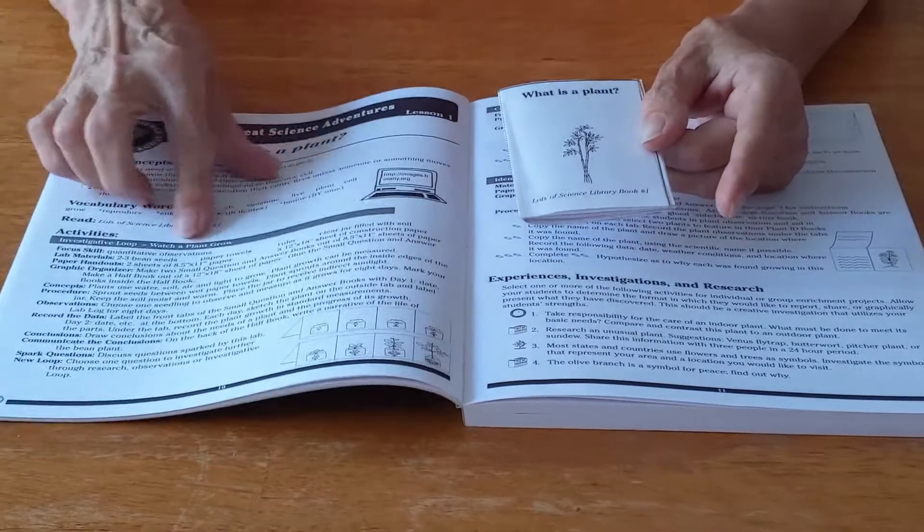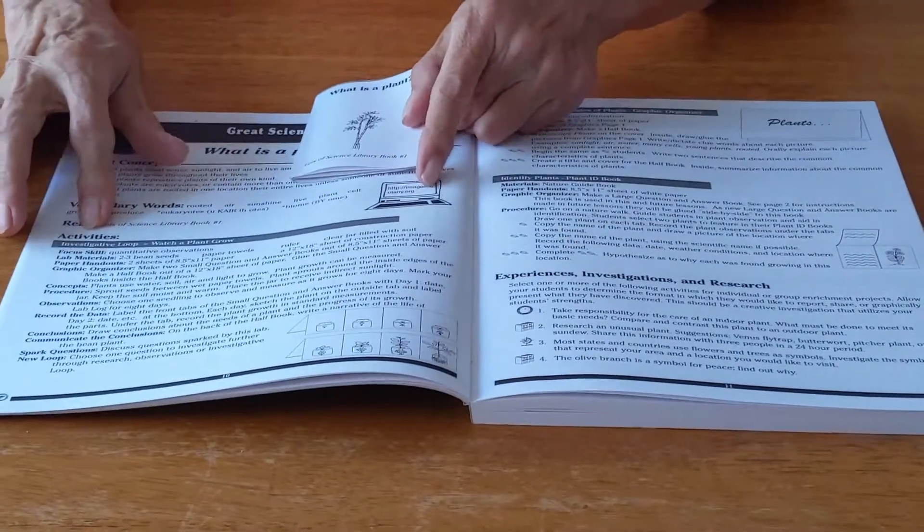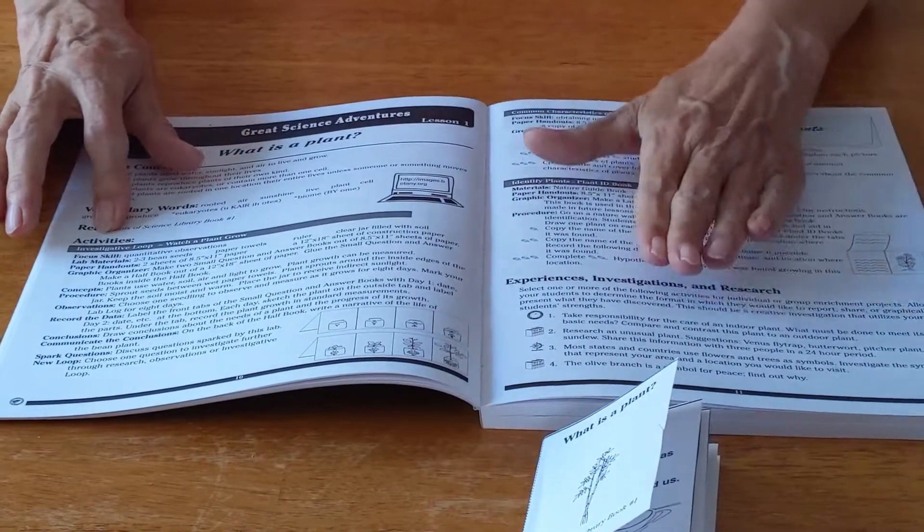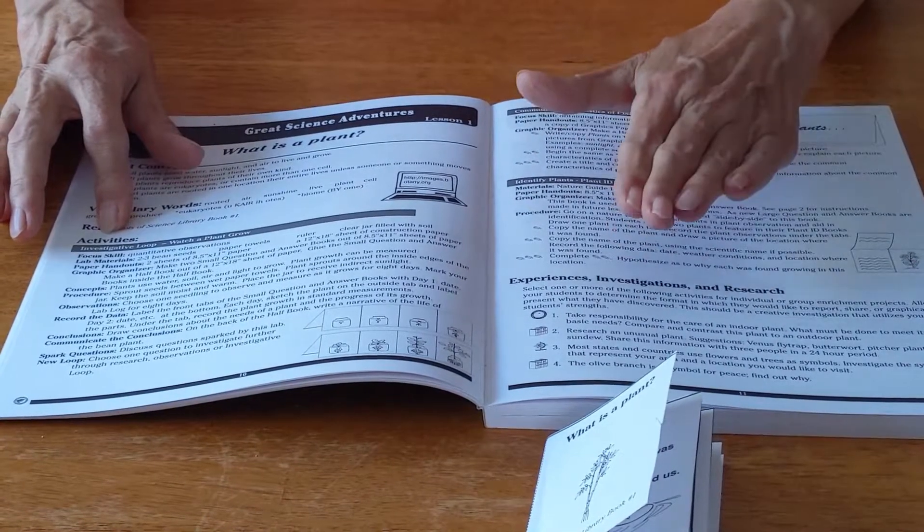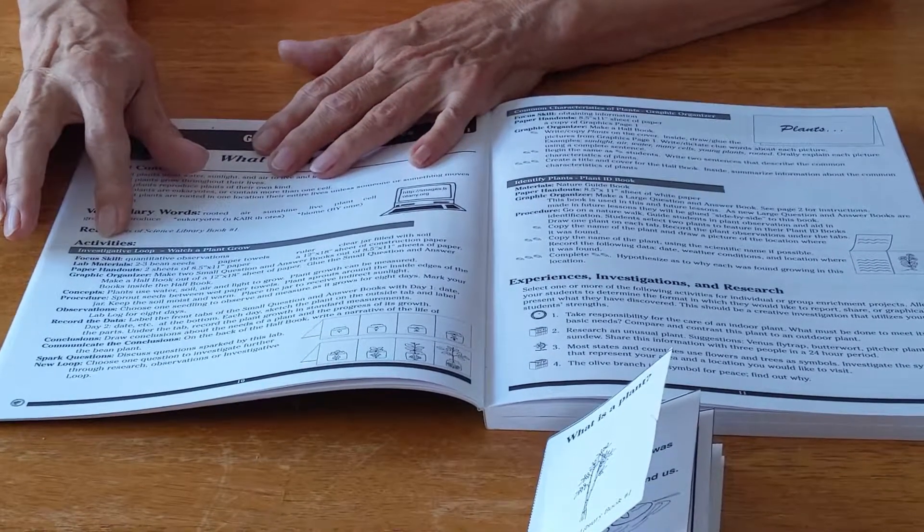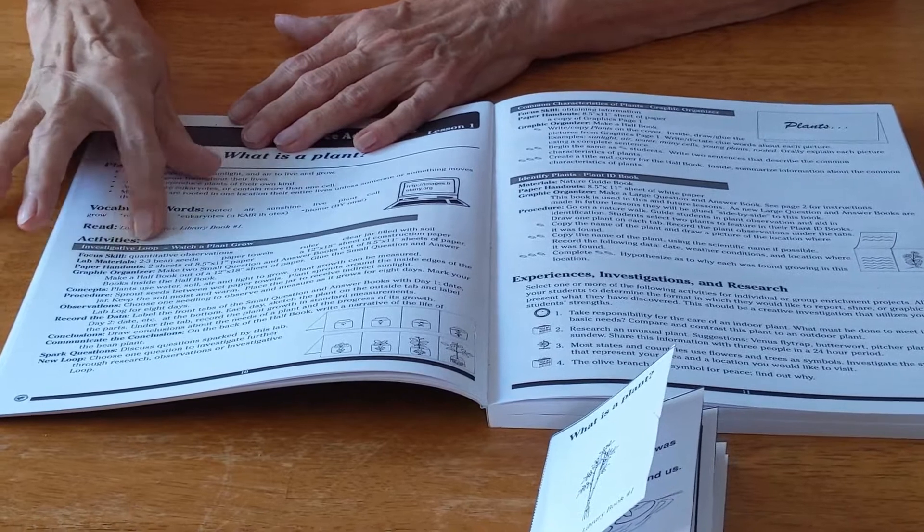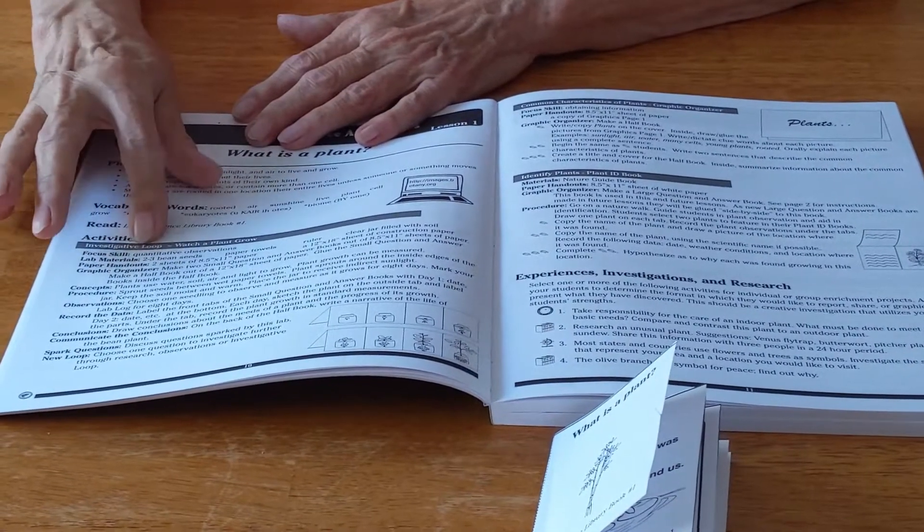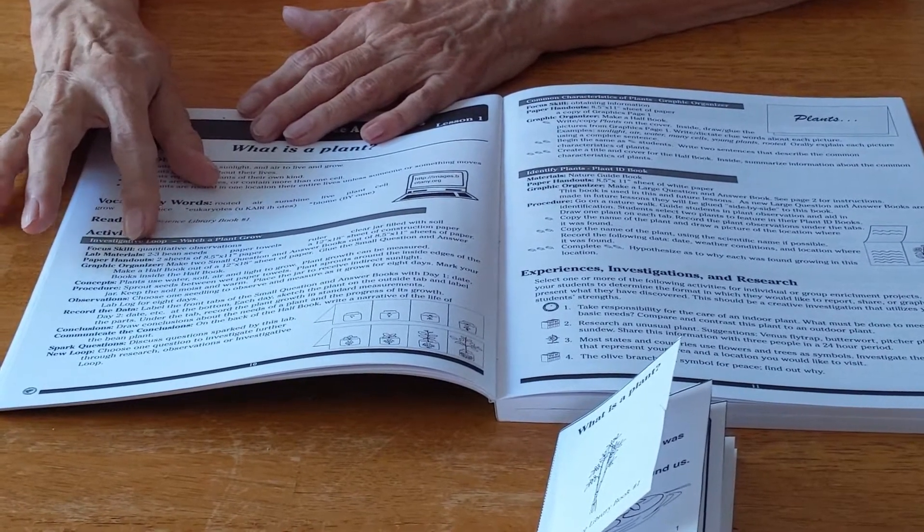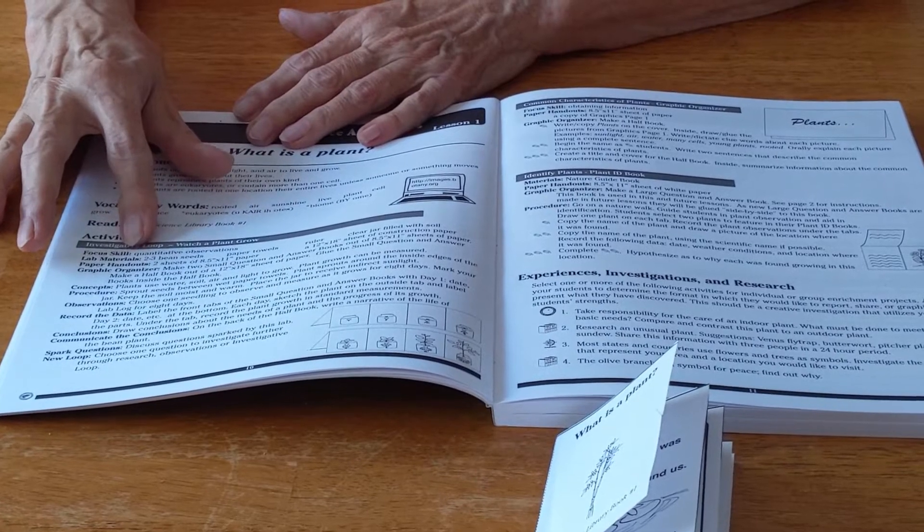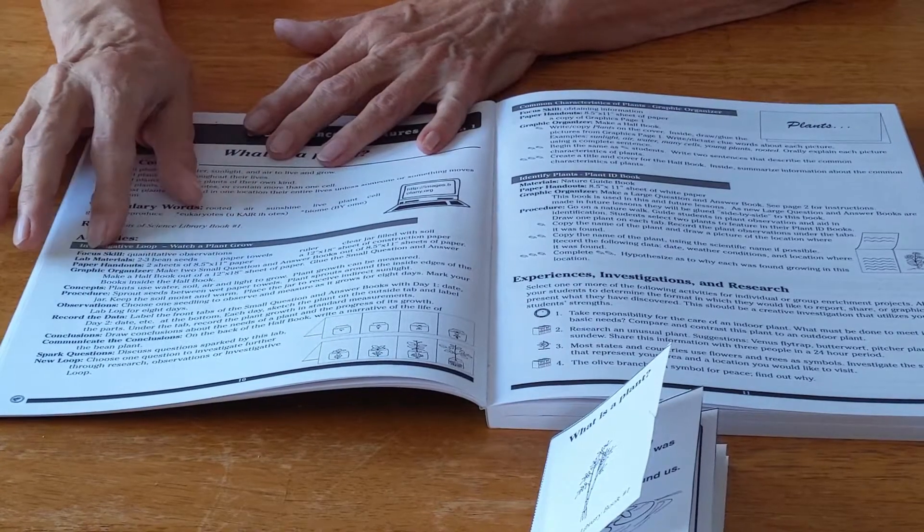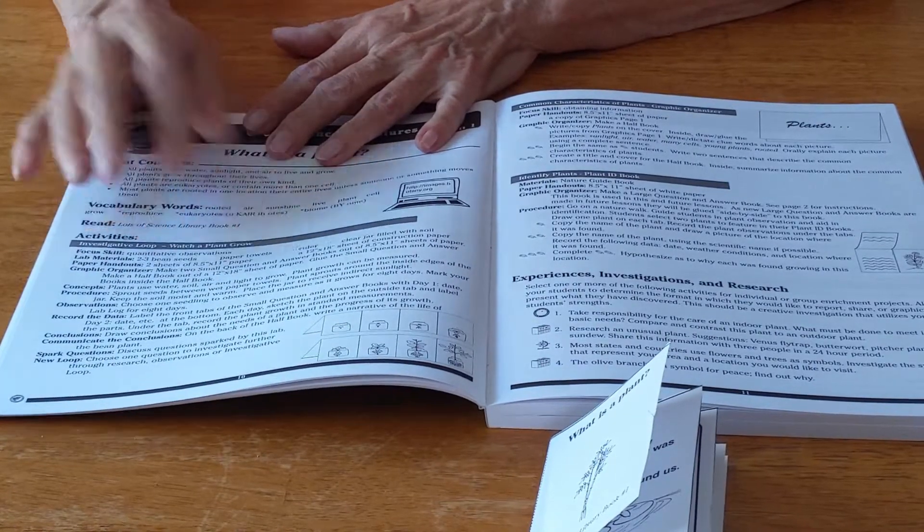Now we have activities that are based on these concepts. You've just read the book with students so you've introduced the concepts, you've talked about it, you've reviewed. Now we're going to do some activities to reinforce what they've learned. Our first activity is a lab we call an investigative loop, and this particular lab is for observation and it's called watch a plant grow.